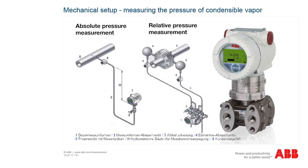To measure the pressure of condensable vapor in the process pipe, the sampling point must be located at the side of the process pipe. The pressure transmitter must be mounted with the cable entry pointing downward to prevent liquid ingress. The connection leads should be provided with a drip loop if possible. The pressure transmitter is mounted beneath the sampling point and the perpendicular part of the impulse line must be filled with a compatible filling fluid.